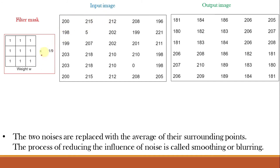Let us understand an example of a smoothing or averaging spatial filter. It is called an averaging filter because we normalize the output by dividing by the total of the filter mask coefficients. Such filter masks are also known as box filters — a box filter is one in which all coefficients are equal. Looking at an input image with mostly white values near 255, there are two values near black (zero) which act as noise. To remove this noise, we use a box filter and perform convolution on this input image.